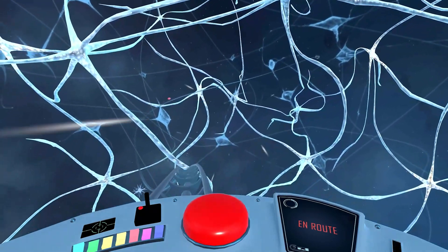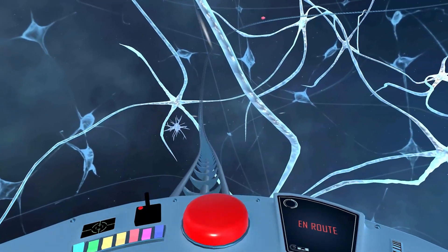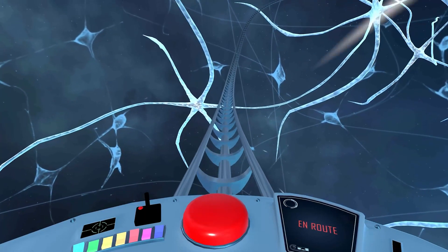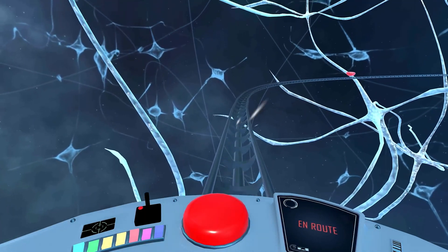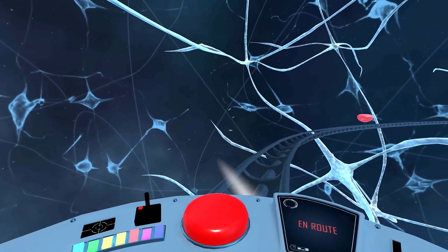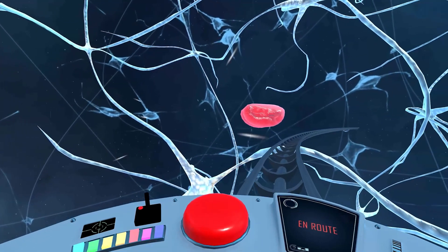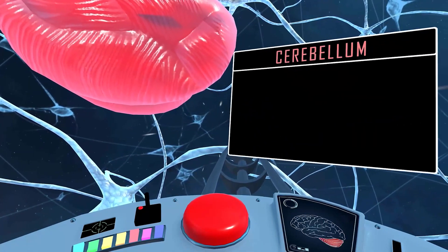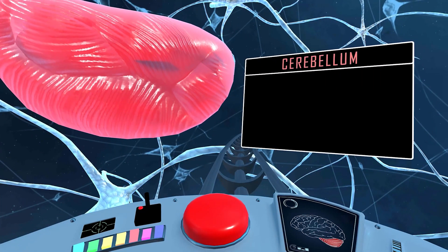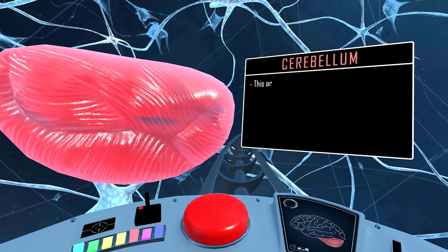We're headed down to the bottom of the brain, to a large, stand-alone brain region. Our final stop is the cerebellum. This area helps you walk,